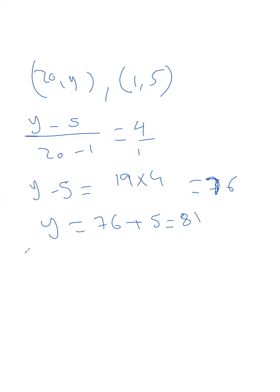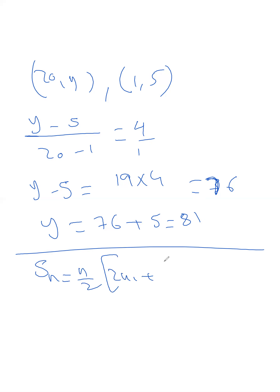We also have the sum of the terms of a sequence by two rules. The first is S_n equals n over 2 times 2u_1 plus n minus 1 times d. The second is S_n equals n over 2 times u_1 plus the last term.